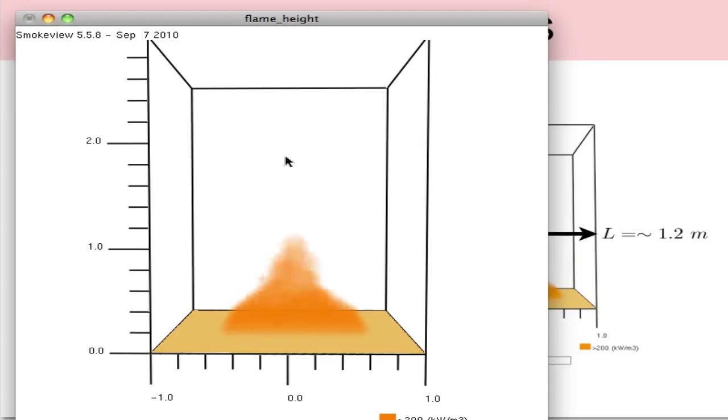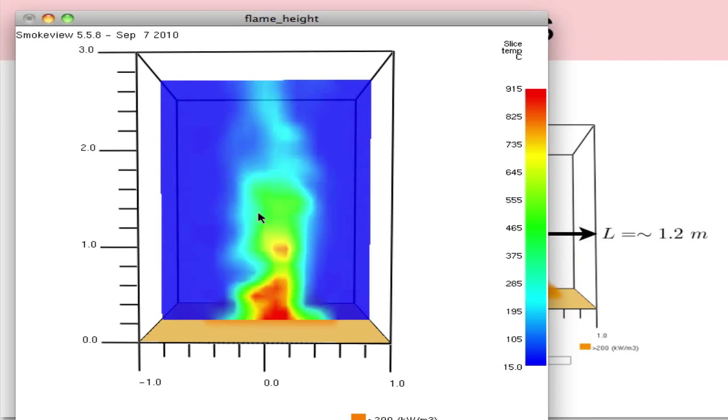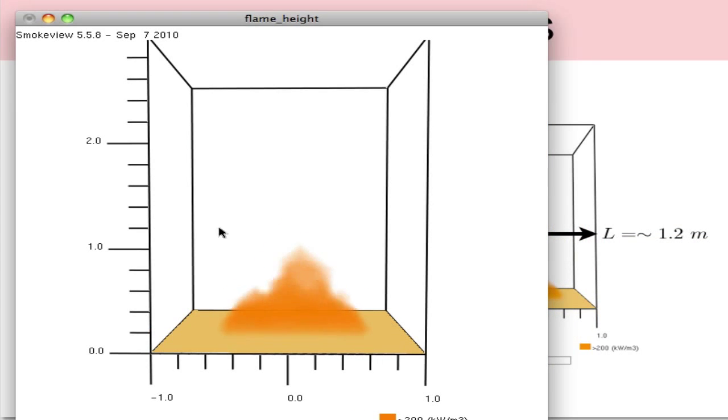If we look we can see the different regions. First we see the continuous flame region near the base, then here we see the intermittent flame region where the flame is sort of pulsing up and down and there's not always flame. Also above here if I turn on the temperature of the slice file, we can see hot gases exist above the physical flame height on the order of 400 to 500 degrees celsius, so that's defined as the plume region.